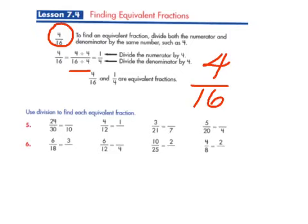4 divided by 4 is 1. 16 divided by 4 is 4. So, an equivalent fraction would be 1 fourth. Or, we could divide by 2 on each. And, 4 divided by 2 is 2. 16 divided by 2 is 8. So, 2 eighths is another equivalent fraction.